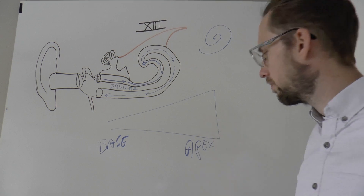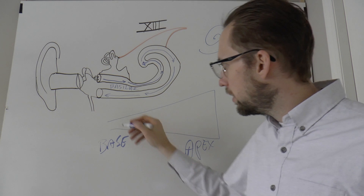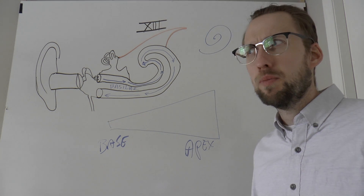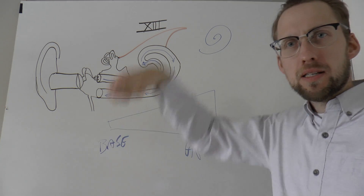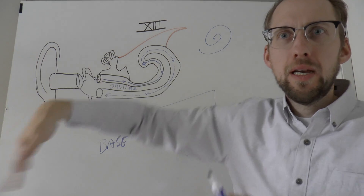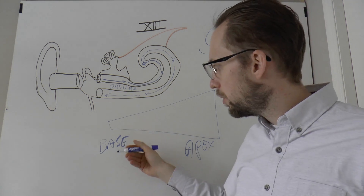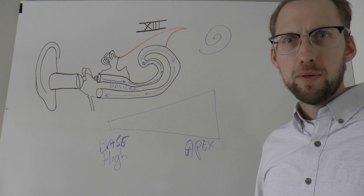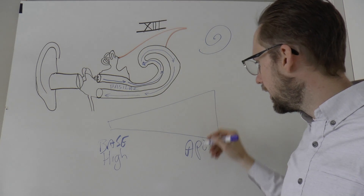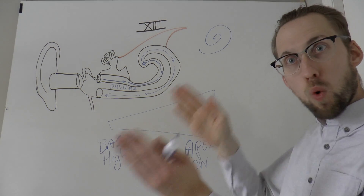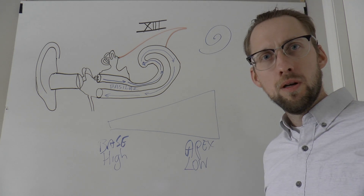The base is near the oval window and the apex is near the helicotrema. The base is stiff — think of a rope: if you whip it, the far end makes that big snapping motion, but this part near the base doesn't move as much. The base responds to very high frequencies because it's so stiff it needs high frequencies to be made to move. The apex responds best to low frequencies — it's wider, softer, and floppier. Base: high frequency; apex: low frequency.